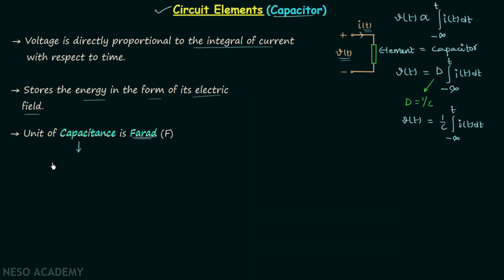Voltage is proportional to charge q, and when we remove the proportionality sign we have V = D times q, where D is equal to 1 over C, the capacitance. From here we get the important result: charge q is equal to C times V.